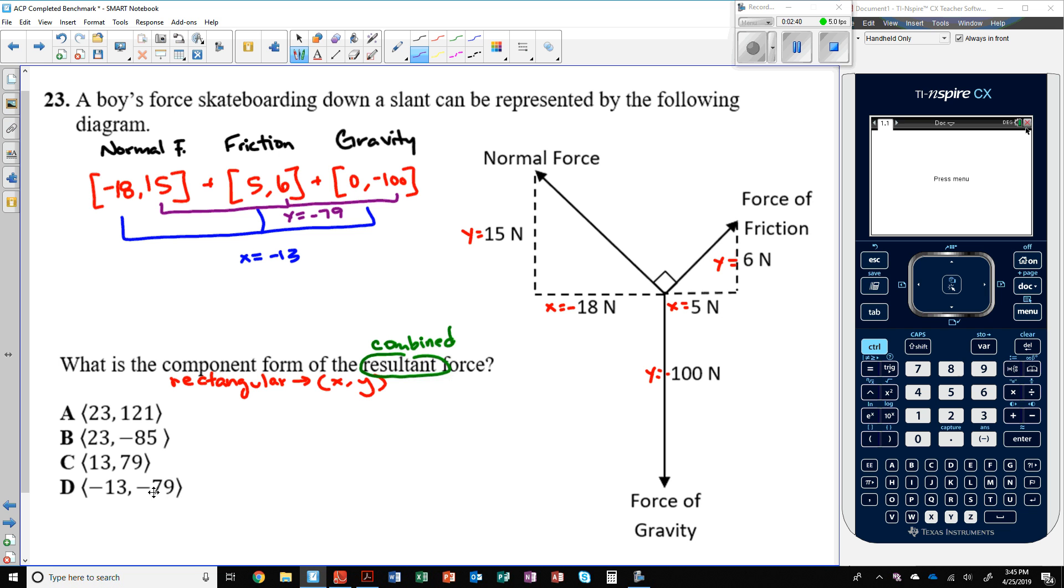So that's what we'd look for here: negative 13, negative 79. The answer is D. That would be the correct choice here.